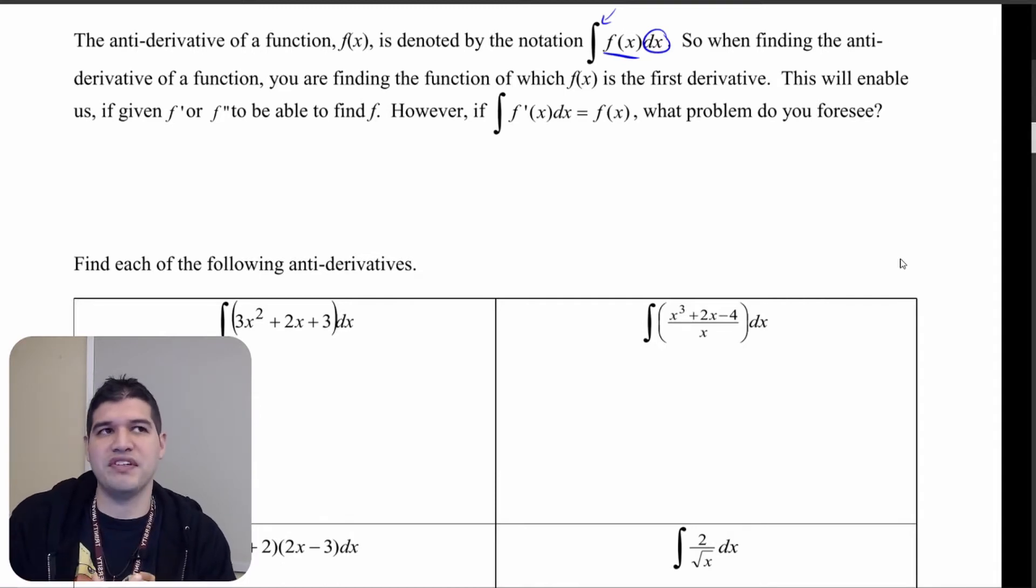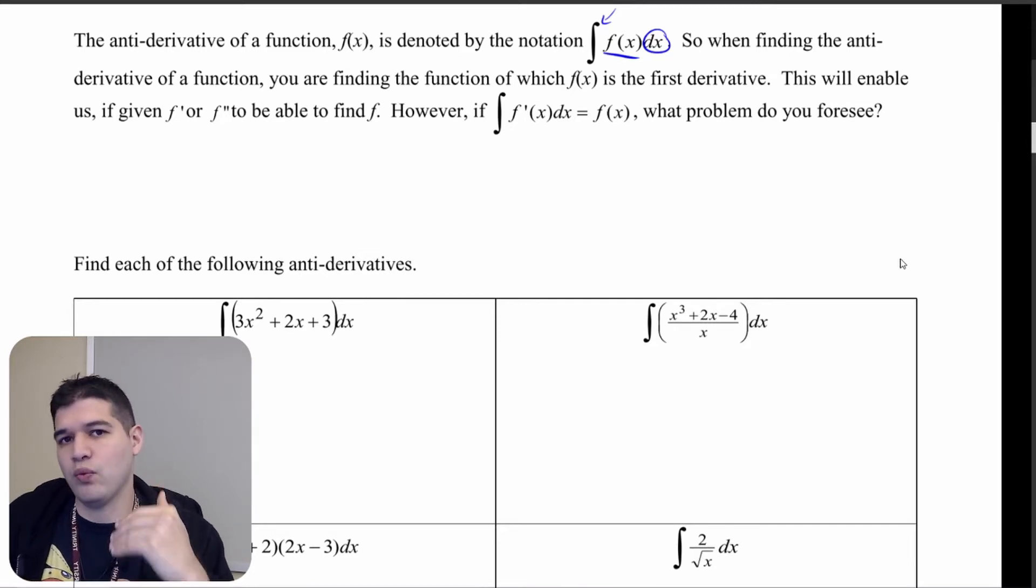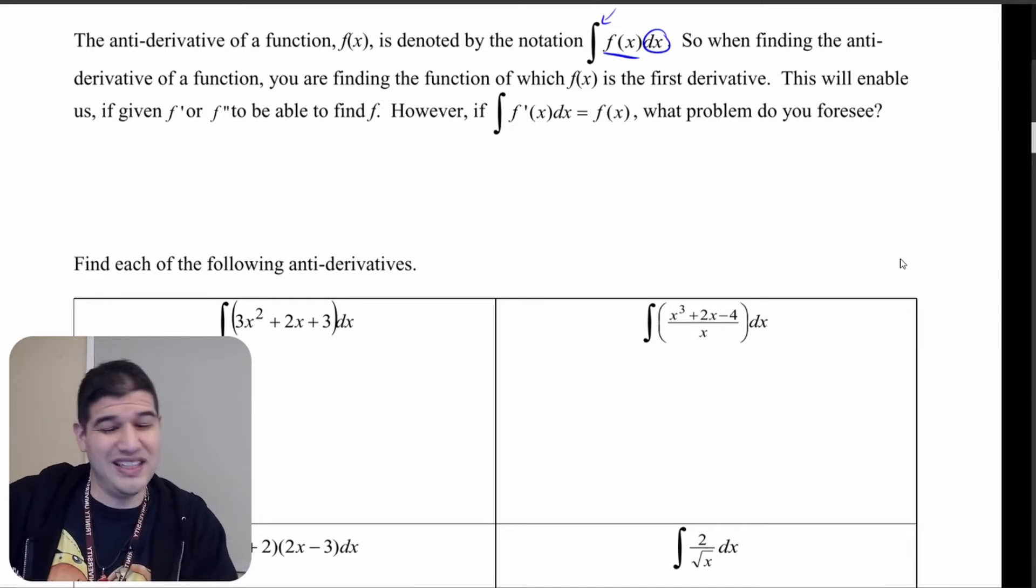For example, if I have the function 4x and I want to think what is that antiderivative, well it's 2x squared, but it could also be 2x squared plus 1, could be 2x squared minus 1, could be 2x squared plus 100, 2x squared minus 100.